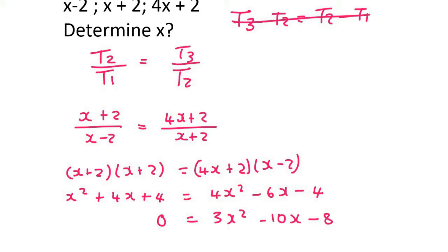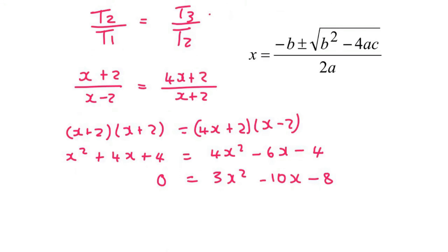You can try to factorize this if you'd like. I'm going to use the quadratic formula. Using the quadratic formula, you should get x equals 4 or x equals negative two-thirds.